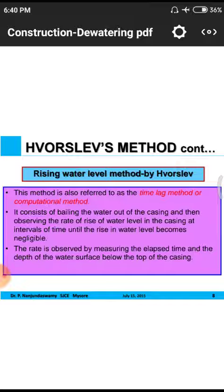Casings are provided in boreholes because during continuous digging, mud may fall into the hole and block it, preventing water access. The casing obstructs falling mud particles from entering the borehole. By bailing water out of the casing and observing the rate at which water rises back, we can determine the groundwater level using time-elapsed measurements and depth of water surface below the top of the casing.